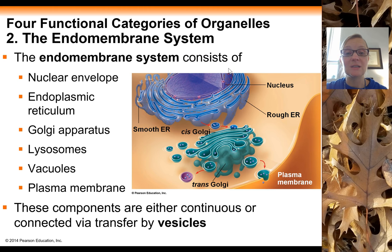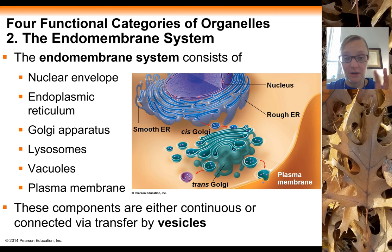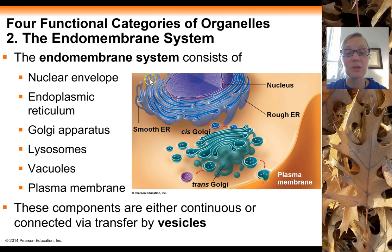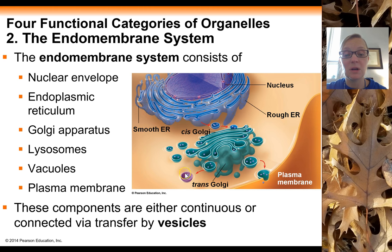The nucleus has a membrane surrounding it called the nuclear envelope. We spent quite a bit of time on that in the genetic control section, so we'll leave it and start with a discussion of the endoplasmic reticulum, shown here as the blue membrane-rich structure. From there we go to the Golgi, shown in teal, and from the Golgi the endomembrane system can go to lysosomes, vacuoles, and finally the plasma membrane on the outside of the cell.